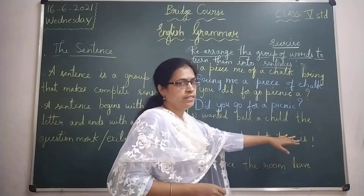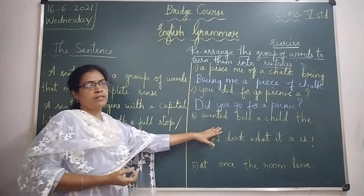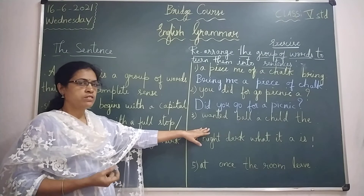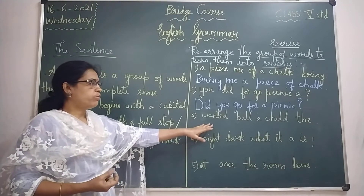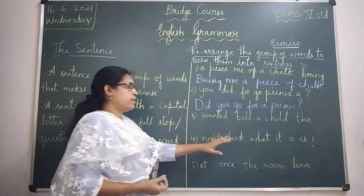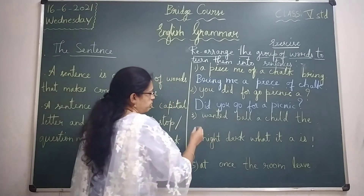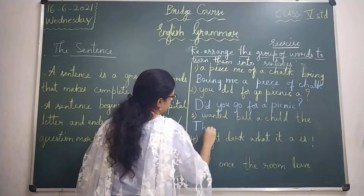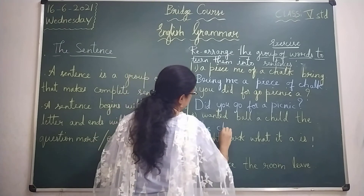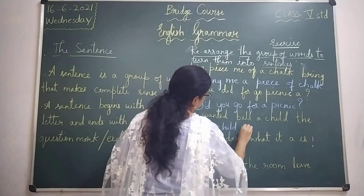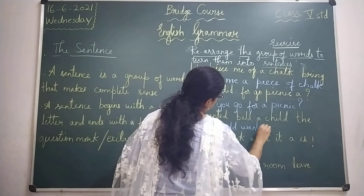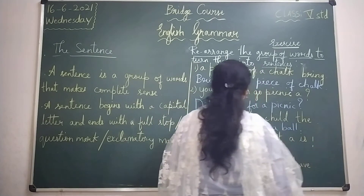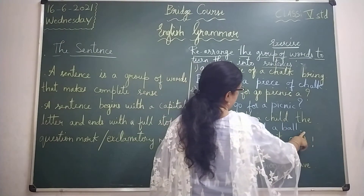The third group of words is 'wanted a ball or child' — it does not make any complete sense. So what we have to do is rearrange it: 'The child wanted a ball.' Again, start the sentence with a capital letter — capital 'T' — 'The child wanted a ball.' And it ends with a full stop.